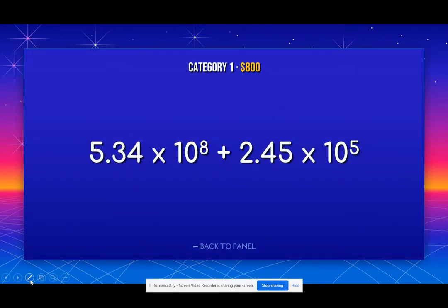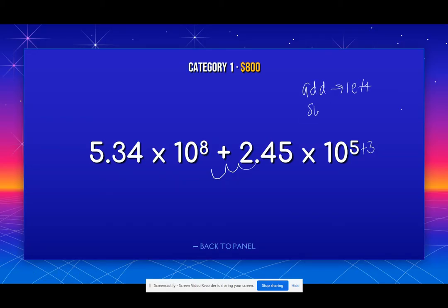So we're going to be adding these two. When you have addition and subtraction of scientific notation, you have to get the exponents to become the same. So from five to eight we need to get three more. If I'm adding three, I need to move the decimal place over three to the left. When you add, you move left. When you subtract, you move right. And we'll see that in other cases as well.